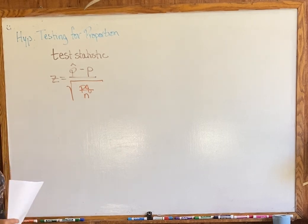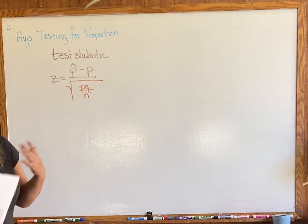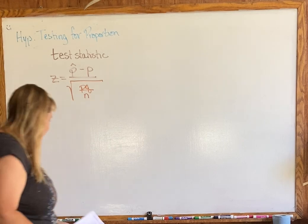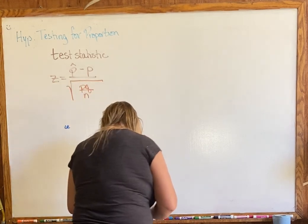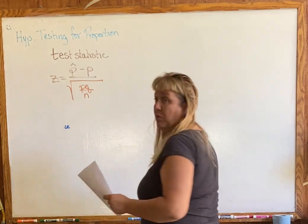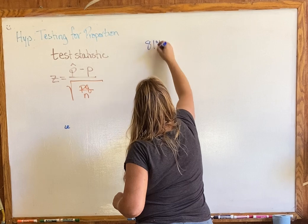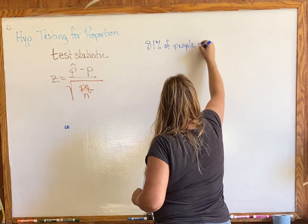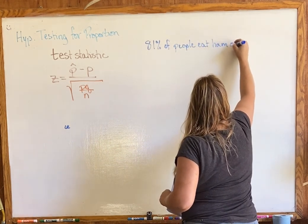Other than the Z-score formula for proportions, the problems maintain the same format — everything is the same. Let's do an example: 81% of people eat ham on Easter.